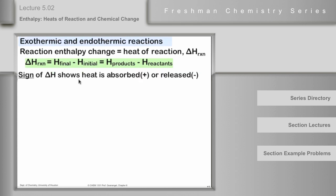The sign of delta H shows whether heat is absorbed, if it has a positive sign, or released, if it has a negative sign. It makes sense, right? If heat is absorbed, it's going to make the heat content greater, so that's a plus sign. If heat is lost, then it's going to make the heat content lower, and then that's a negative sign.